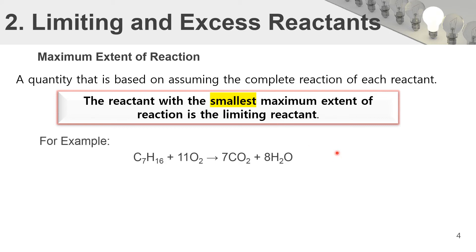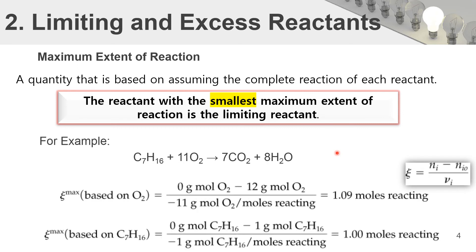Applying the maximum extent of reaction relationship to our equation: for oxygen, 12 moles were fed and using the stoichiometric coefficient of 11, we calculate a maximum extent of 1.09 moles. For heptane, we find a maximum extent of 1 mole. Since 1 is smaller than 1.09, heptane is the limiting reactant and oxygen is the excess reactant.